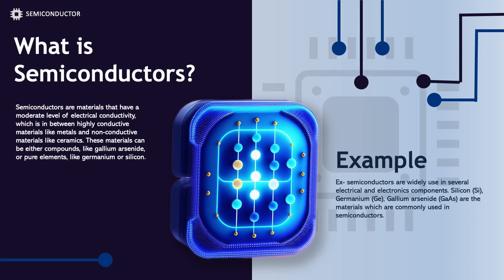What are semiconductors? Semiconductors are materials that have a moderate level of electrical conductivity, which is in between highly conductive materials like metals and non-conductive materials like ceramics. These materials can be either compounds, like gallium arsenide, or pure elements, like germanium or silicon.